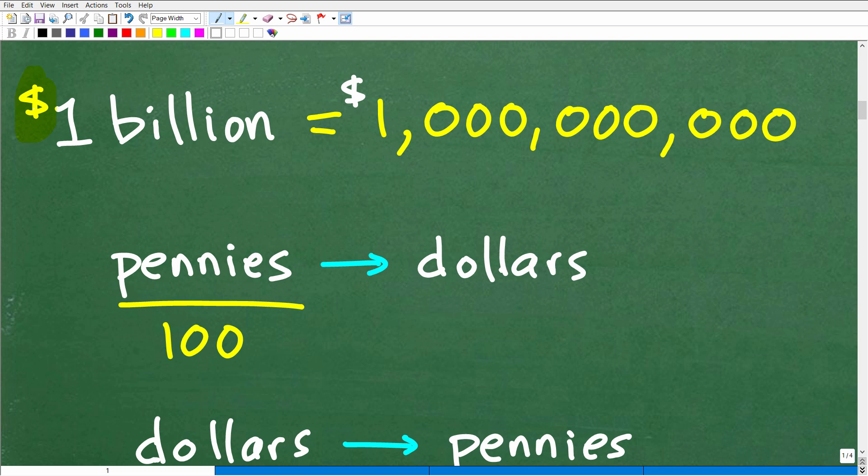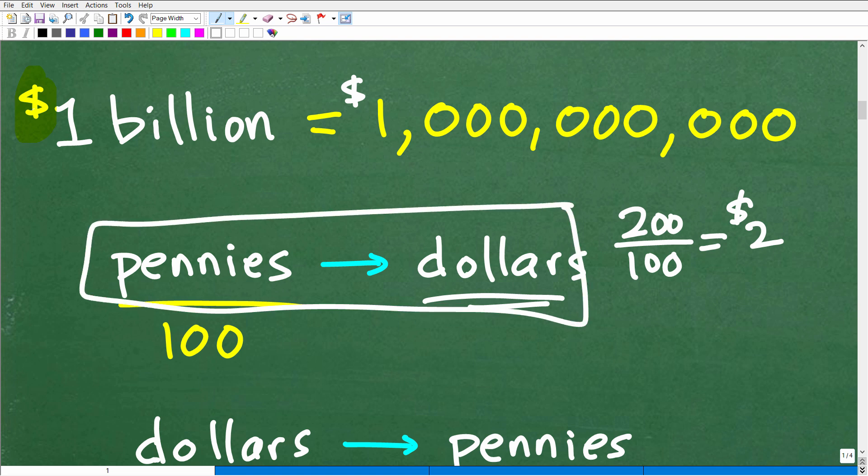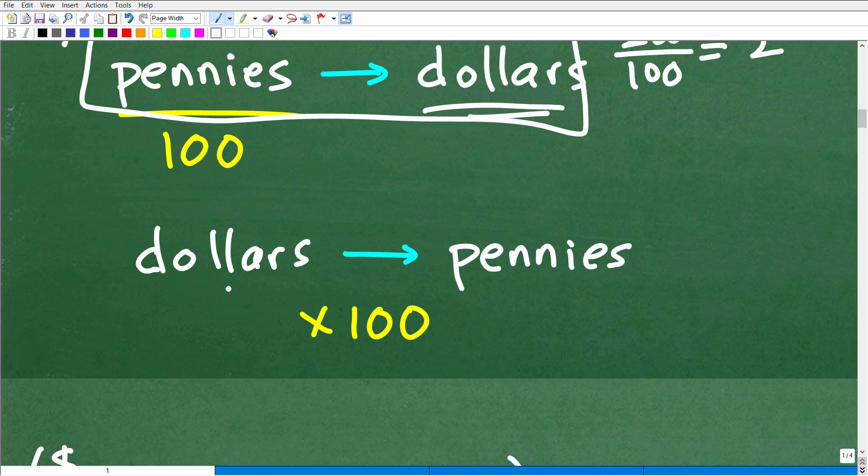If you want to go from pennies to dollars, divide by 100. In other words, if I have 200 pennies, I divide that by 100 to go to dollars. So 200 pennies equals $2, right? But that's not the conversion factor I want. I want to know how many pennies are in a billion dollars. So I want to be thinking about dollars to pennies.